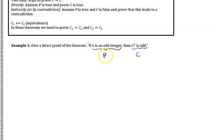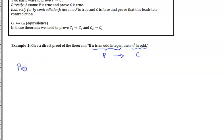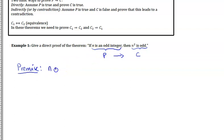We're trying to show that if we assume P is true, then C needs to be true. So we start the direct proof by assuming the premise is true: N is an odd integer.